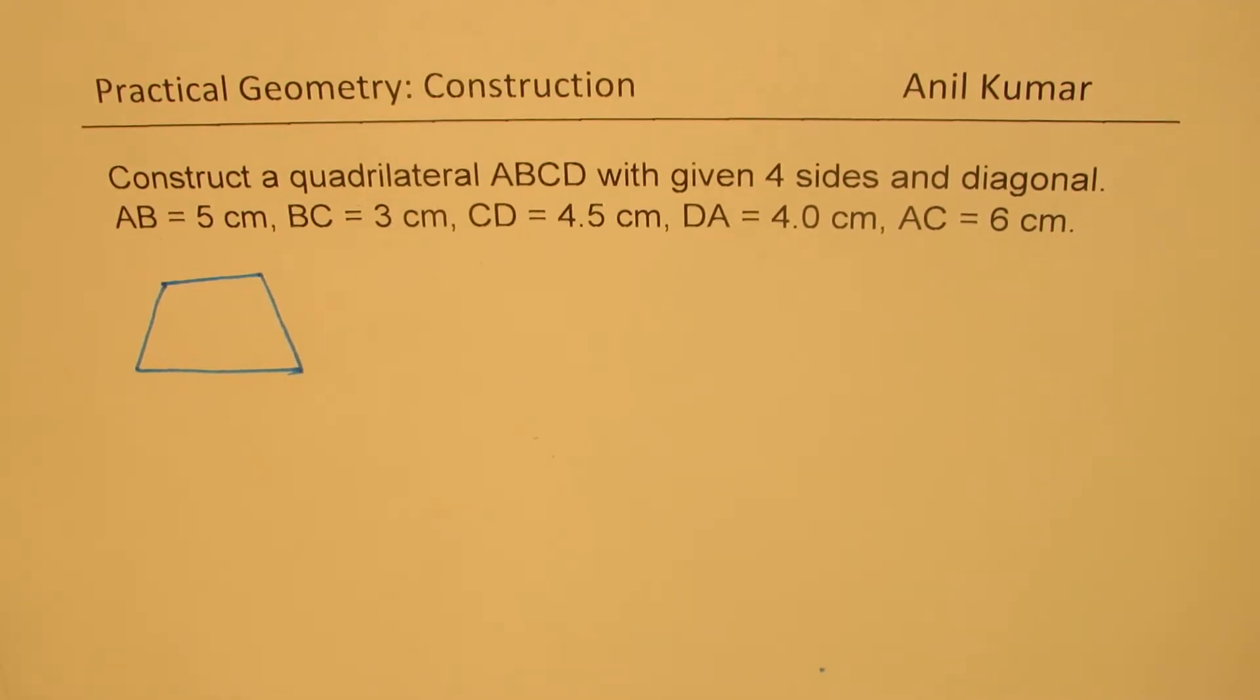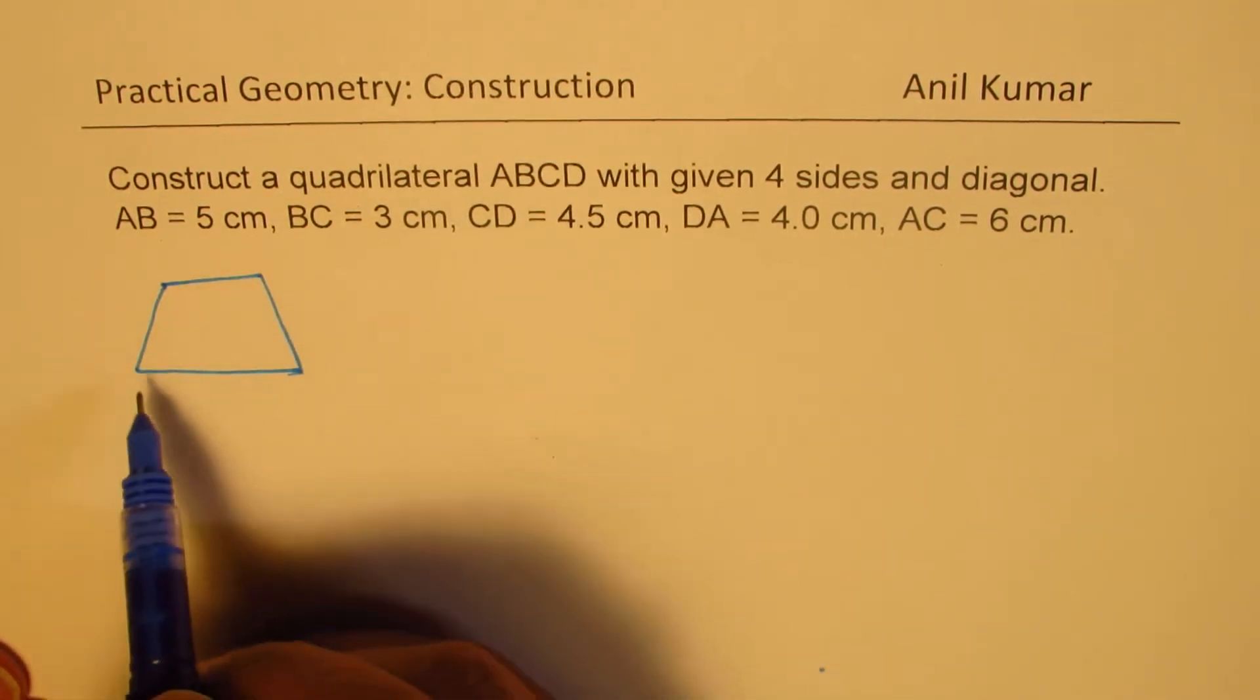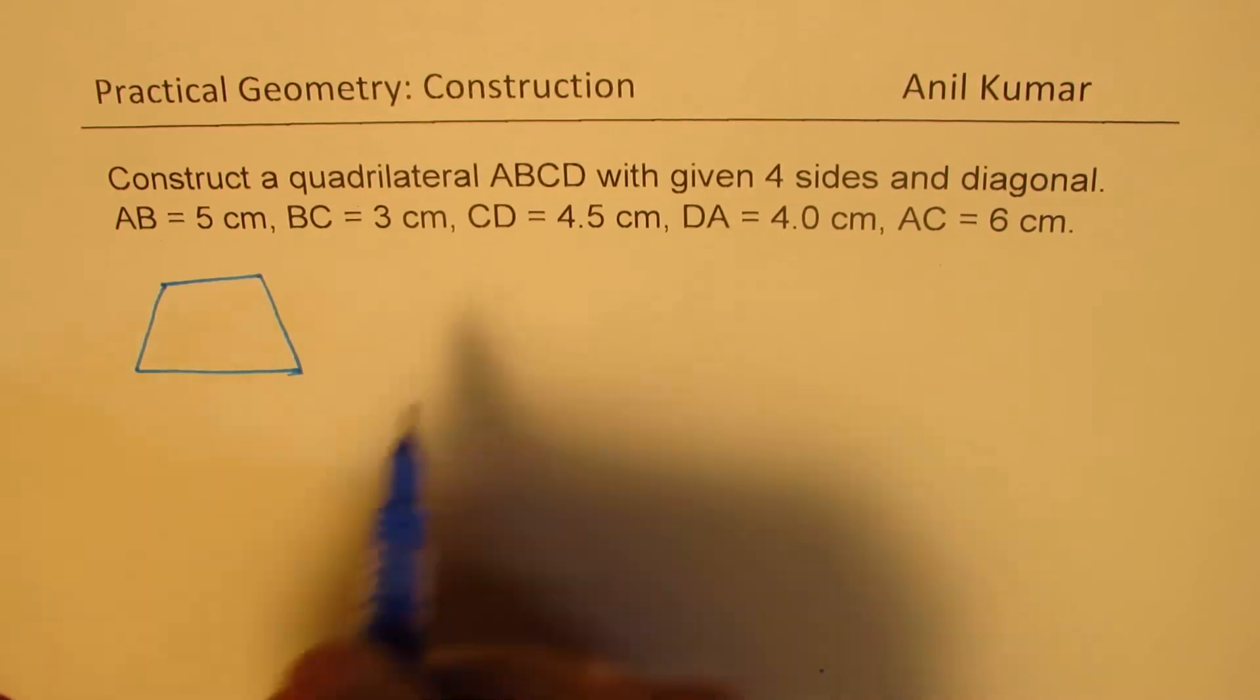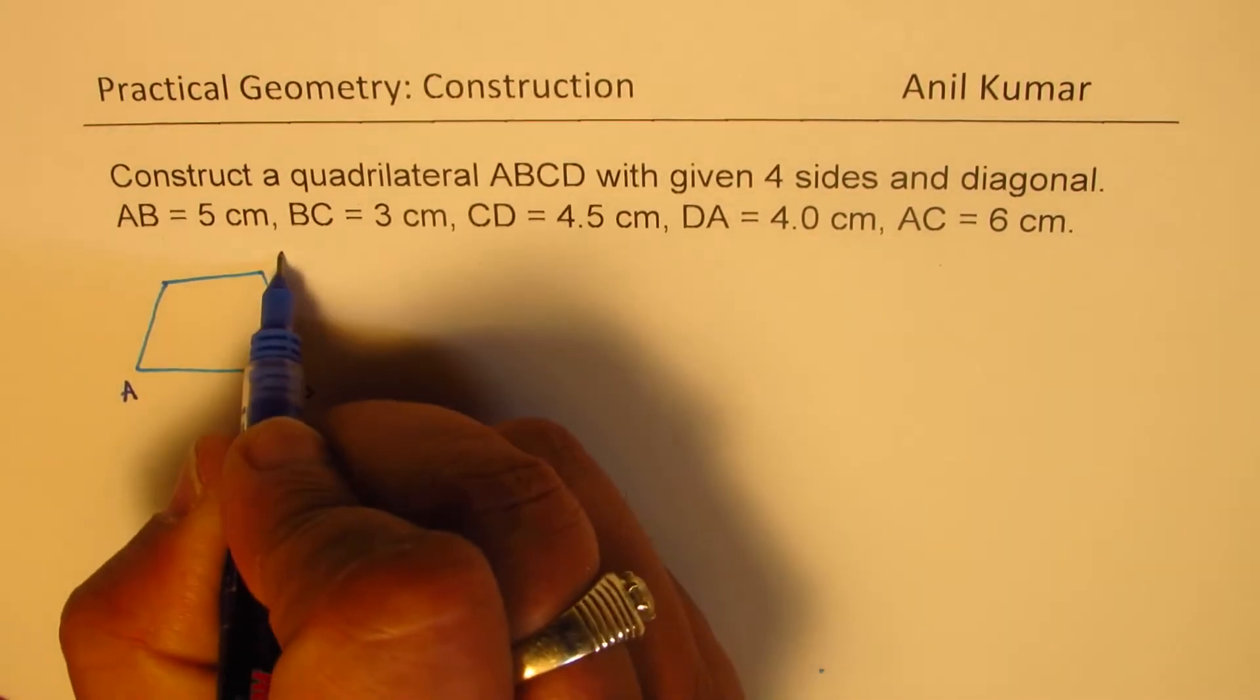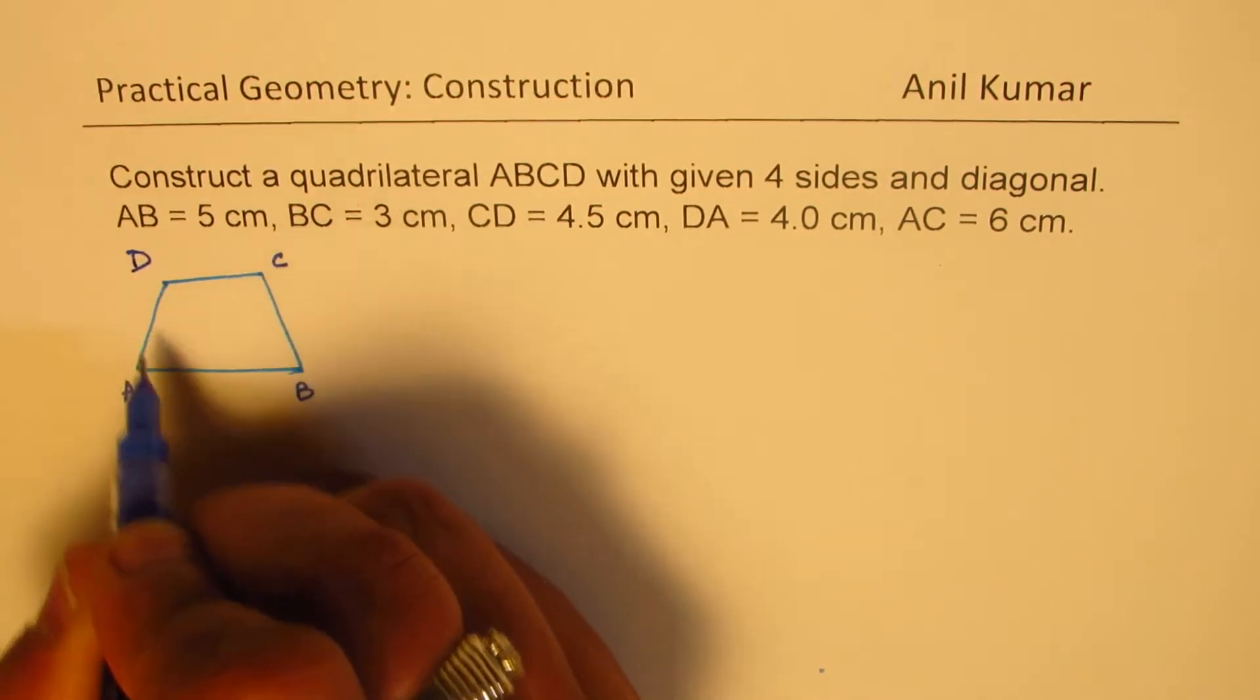So whenever you construct a figure you have to order it in a particular way, either clockwise or counterclockwise. So let me say this is A, B, C, and D. We go counterclockwise to label the vertices.